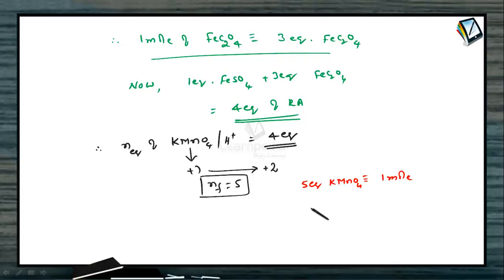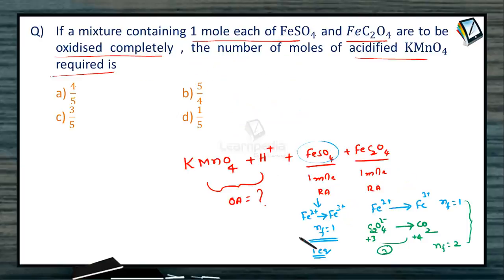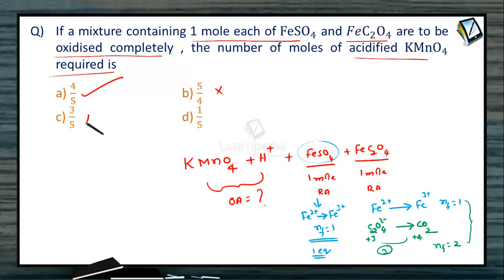We have 4 equivalents altogether. So 4 equivalents corresponds to 4/5 moles of KMnO₄. Therefore, 4/5 moles of KMnO₄ is required to oxidize a mixture containing 1 mole each of ferrous sulfate and ferrous oxalate. The answer is A: 4/5. The other options — 5/4, 3/5, and 1/5 — are all incorrect.